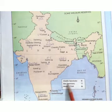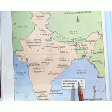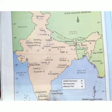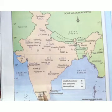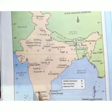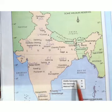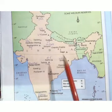For bird sanctuaries, number one is Bharatpur in Rajasthan, and number two is Ranganathittu in Karnataka. For wildlife sanctuaries, number one is Sariska, which is in Rajasthan.